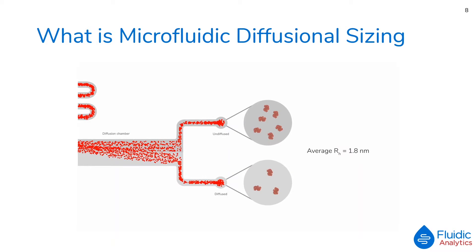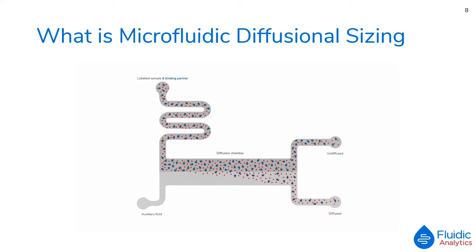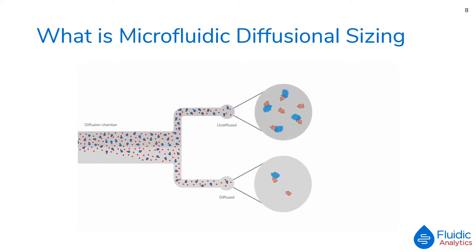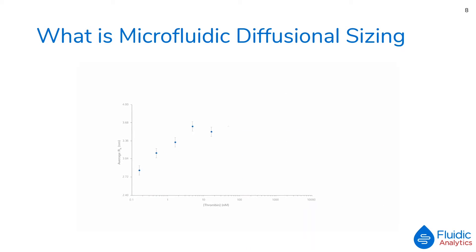The ratio of fluorescence between the two streams gives us the protein's hydrodynamic radius. The Fluidity 1W can measure this with proteins in buffer and in crude solutions like cell lysates or biological fluids, because only the labelled species is detected. If we repeat the test using a mixture of labelled protein and unlabelled binding partner, we can observe the degree of binding due to the change in size. Only species including the labelled protein are detected and measured. Titrating the binding partner against the labelled protein gives a binding curve and automatically generates a KD value on screen.